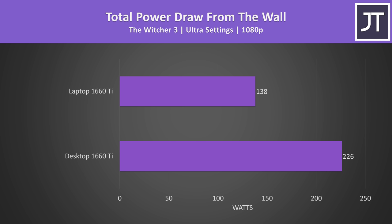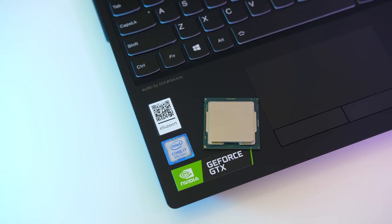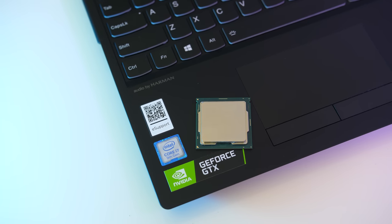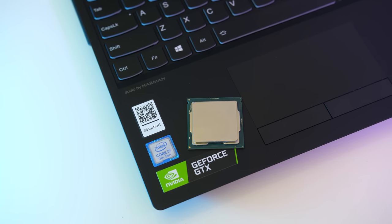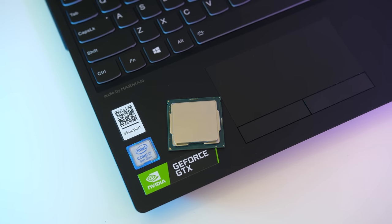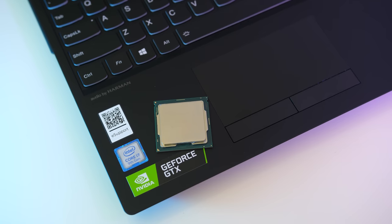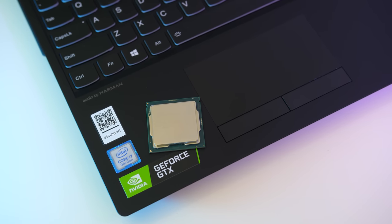These are the differences in power draw from the wall with The Witcher 3 running on both at max settings. The desktop was using 63% more power in this test, but keep in mind that its CPU is also more power hungry. The desktop would have done better if I didn't cap the CPU, but the point was to compare the GPU in the laptop and desktop as fairly as possible, so all other aspects need to be on a level playing field. In general, higher CPU performance with the desktop should result in increased 1% low performance, so more stability.